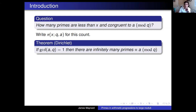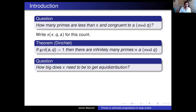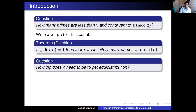Given Dirichlet's theorem, the focus of my talk is really on the quantitative question about how large x needs to be before I start getting good estimates for the number of primes in these different arithmetic progressions. A very natural guess would be that after a certain point, it shouldn't just be that we have several primes in each residue class mod q — it should be that we have roughly the same number. So the refined question is: how big does x need to be for there to be about the same number of primes in each of the different reduced residue classes mod q?